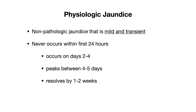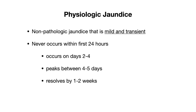There are a few different reasons why physiologic jaundice occurs. One reason is increased bilirubin production: newborns have more red blood cells, typically a hematocrit between 50 to 60 percent, which is much more than an adult's. Fetal red blood cells also have a shorter lifespan, so you have increased turnover and increased production of bilirubin as a result. A second reason is decreased clearance of bilirubin, due to deficiency of UGT activity.